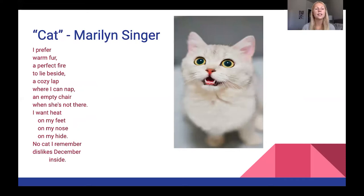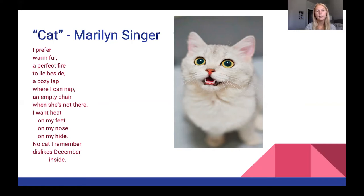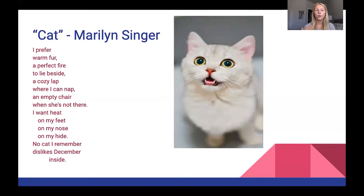Next poem is 'Cat' by Marilyn Singer. 'I prefer warm fur, a perfect fire to lay beside, a cozy lap where I can nap, an empty chair when she's not there, I want heat on my feet, on my nose, on my hide. No cat I remember dislikes December inside.' After I have read this poem, pause the screen if you'd like to read it out loud or to someone around you. Practice the rhythm and the meter of the poem.